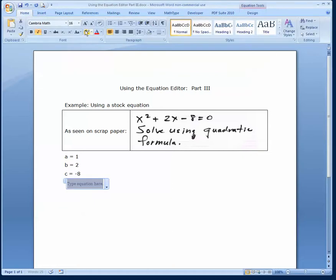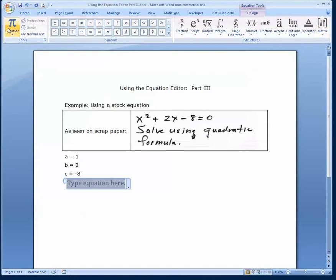Again, I'll go to home and make the font bigger, Calibri 16, that's fine. We'll use that, and then we'll go ahead and come over to the equation tools, and come over to the equation tab, the big pi sign, and click on that.